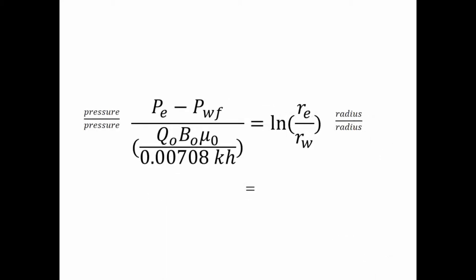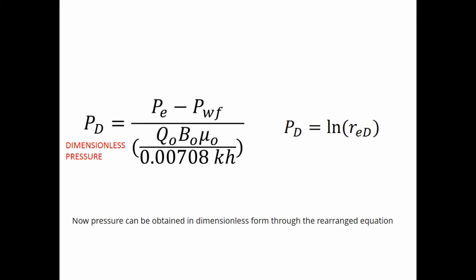As you can see, pressure divided by pressure, you get dimensionless. Same thing goes when radius is divided by radius. Now, pressure can be obtained in dimensionless form through the rearranged equation.